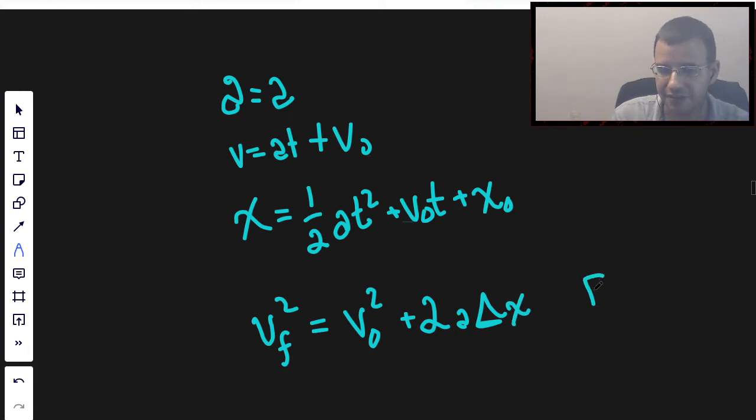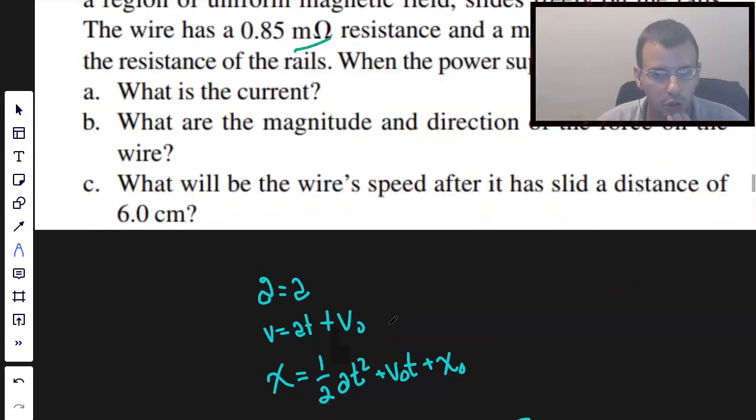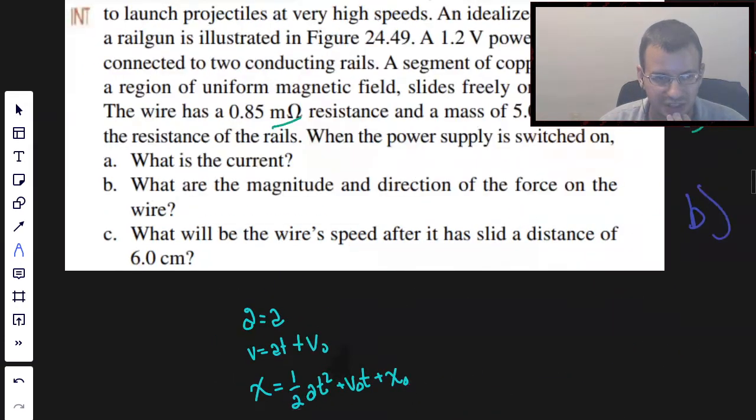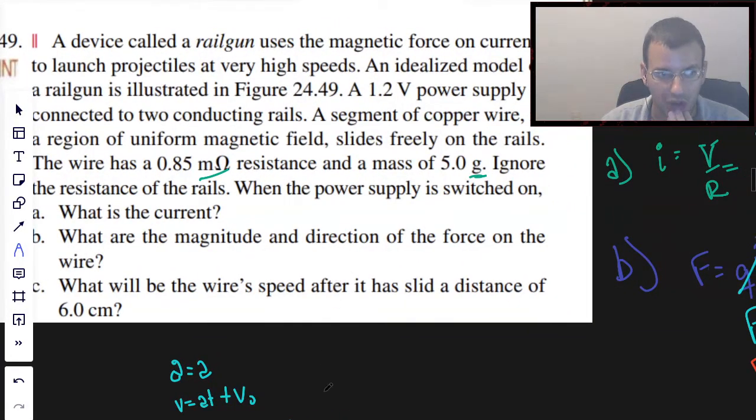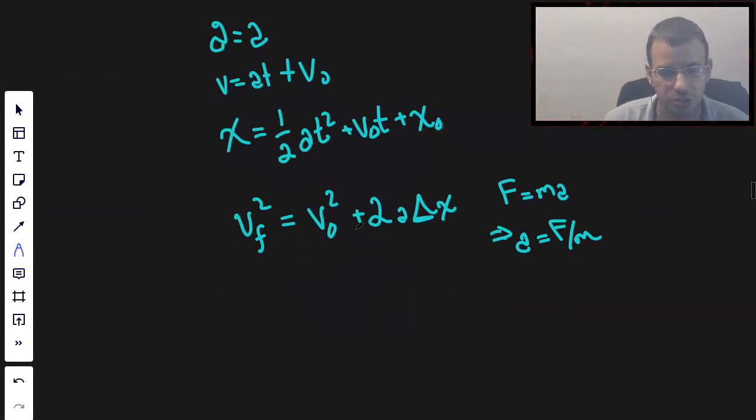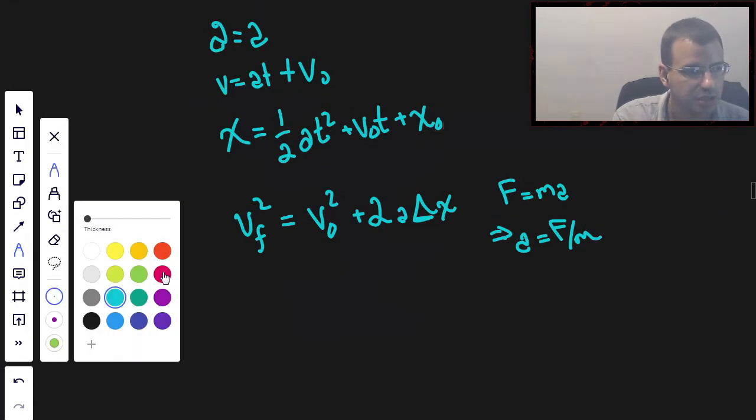Where F equals MA. Therefore, I'm going to say that A equals F divided by M, which we can totally do. So, what will be the wire speed after it slid a distance of 6 centimeters? We're going to assume it starts from rest.